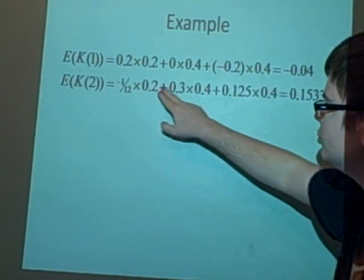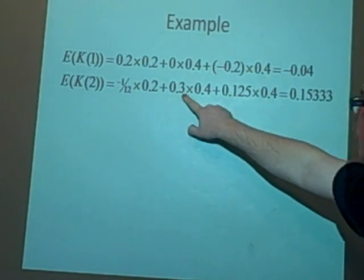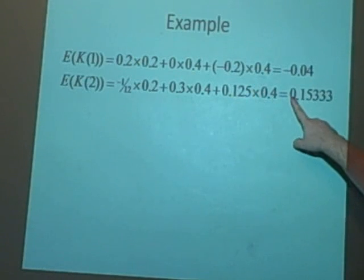Do the same again for K(2): minus a twelfth, 0.3, 0.125, which gives us 0.15333, which I think is 23 over 150.